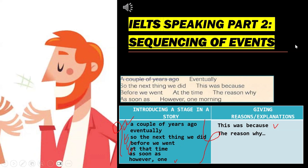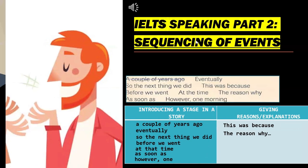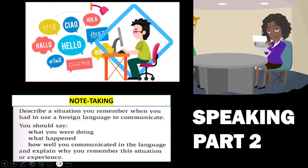That's an example of IELTS Speaking Part 2 where you describe a story of an event. In that case, you use stages in a story — phrases like 'a couple of years ago,' 'eventually,' 'the next thing you did,' and so on, as shown in the table.